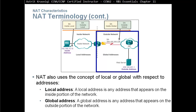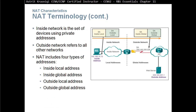So: local is inside, global is outside. Inside network is a set of devices using private addresses. Outside network refers to all other networks. And that includes four types of addresses: inside local address, inside global address, outside local address, and outside global address.